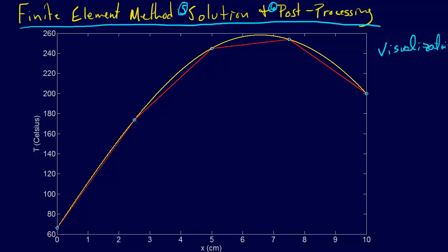Because when we actually solve it, all we get is the values at each point — these points here. We already had the values at these two points, so we got these three intermediate points. And that's what we did.